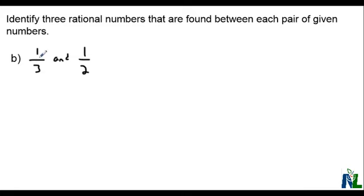So if we have 1 third and 1 half, it's not always easy to figure out a fraction that exists in between them. However, if we first find common denominator between the two, it'll make our lives a lot easier. So the lowest common denominator between 3 and 2 is going to be 6.